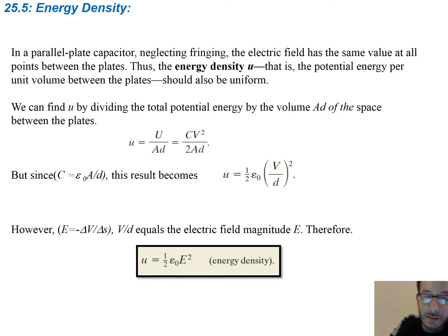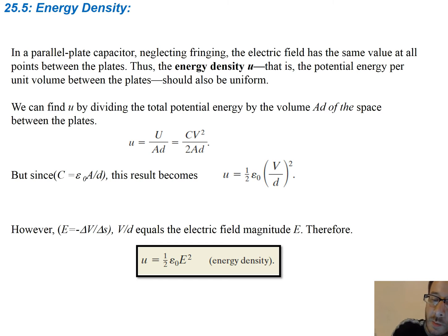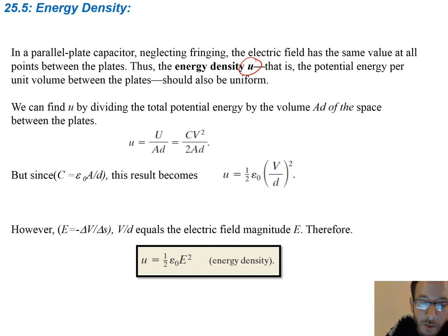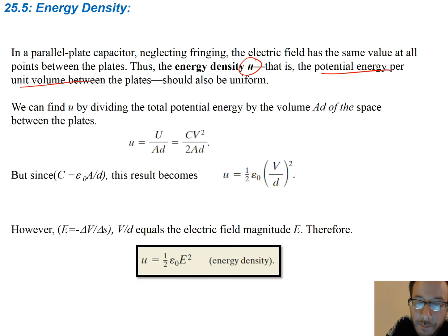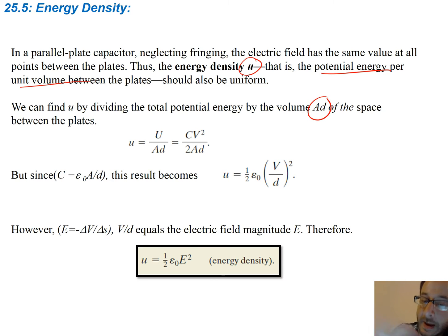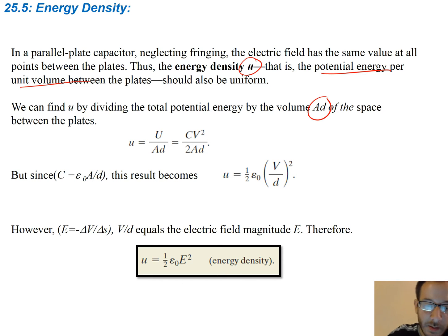Now, in a parallel plate capacitor, neglecting fringing, the electric field has the same value at all points between the plates, thus the energy density. So we're going to define a new term called energy density, and we're going to call that little u — that is, the potential energy per unit volume between the plates. So it's basically U over V, where V is volume. We can find this by dividing the potential energy by the volume AD — the area of the plate times the distance between the plates.